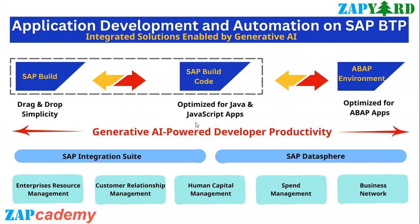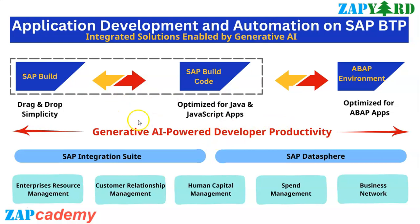You can easily build an application, and with respect to building an application you can also build its data model and services via prompting — using SAP's own Gen AI co-pilot tool called Joule. For example, if you want to build a risk mitigation application, you can just provide the prompts, generate the application, its data model and services, and if you're not satisfied, you can re-enter your prompt and regenerate the application.